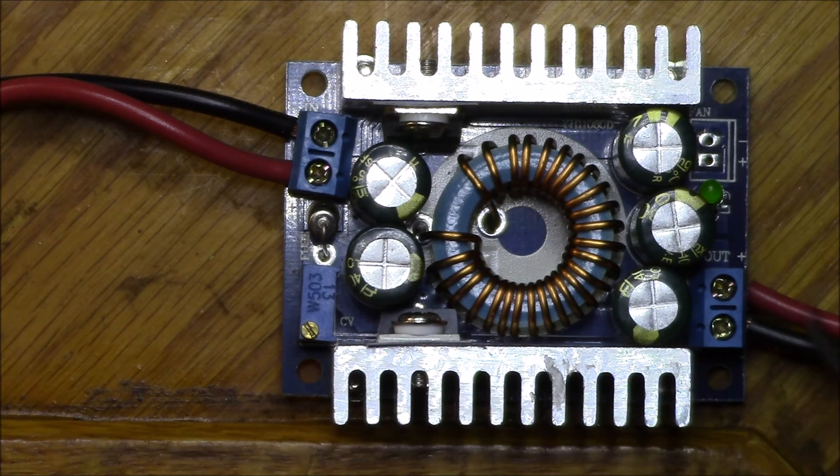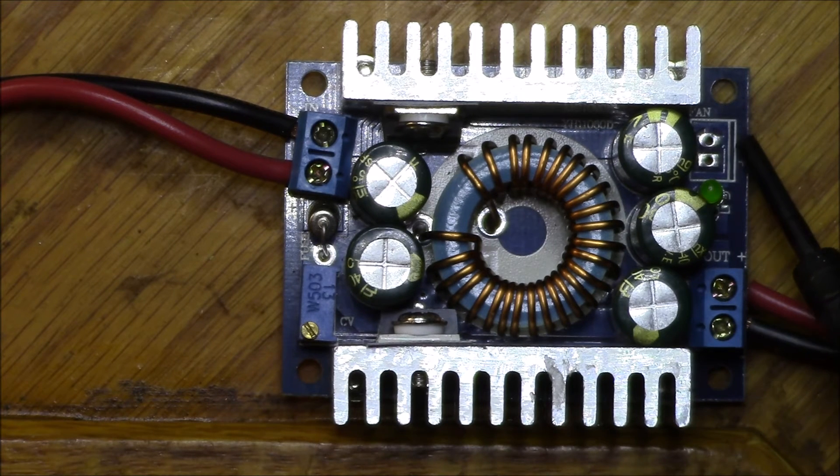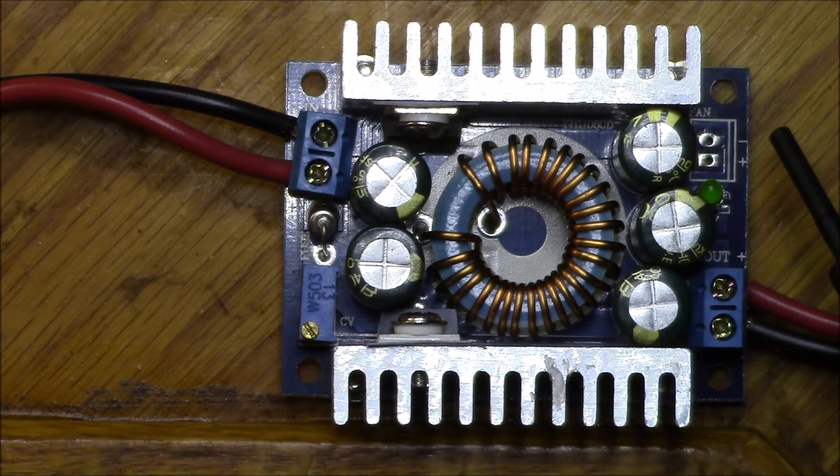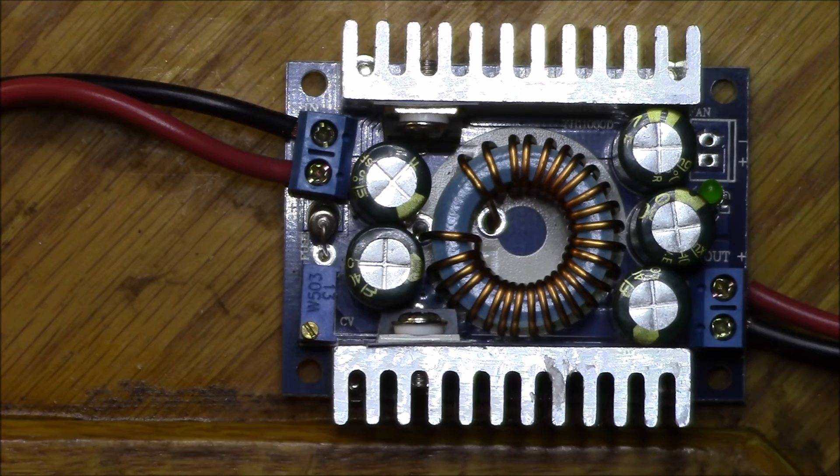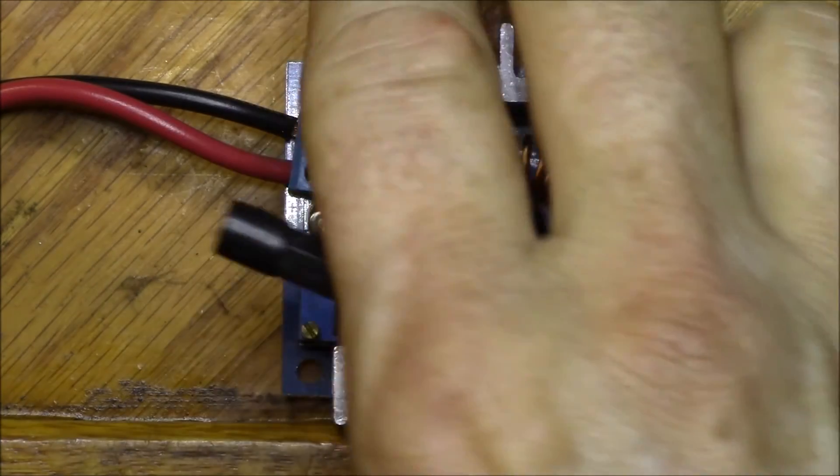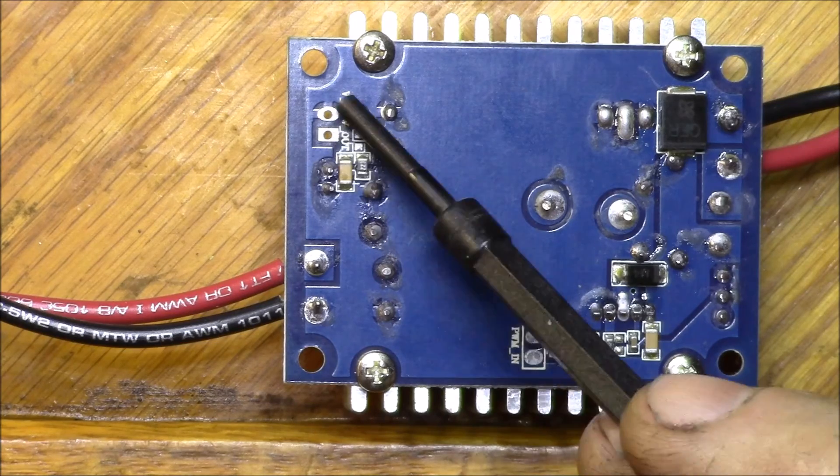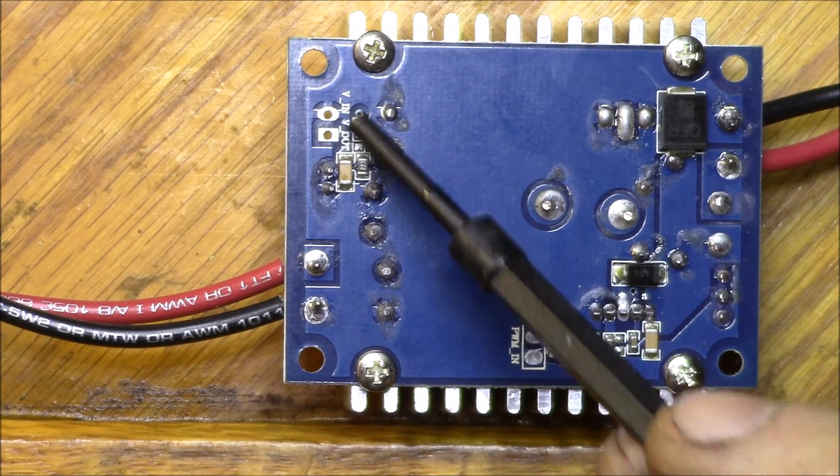There's a green power LED, and then over next to the output connector is an unpopulated pin header location. It's labeled plus, minus and then fan. And if we flip the unit over here, this can be used to install a pin header for a cooling fan if desired.